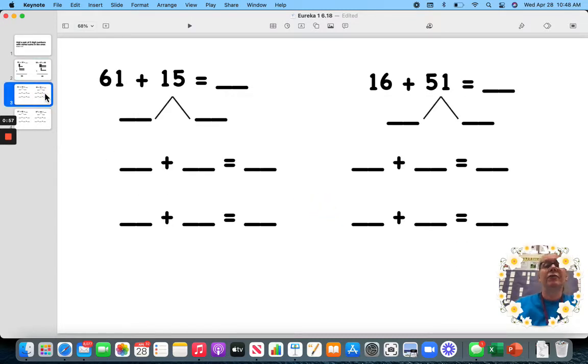Now, let's try it with the number bonds. We've done this before, so we're going to have two pages of number bonds. 15 is 10 and 5. This time, I'm going to add 61 and 10.